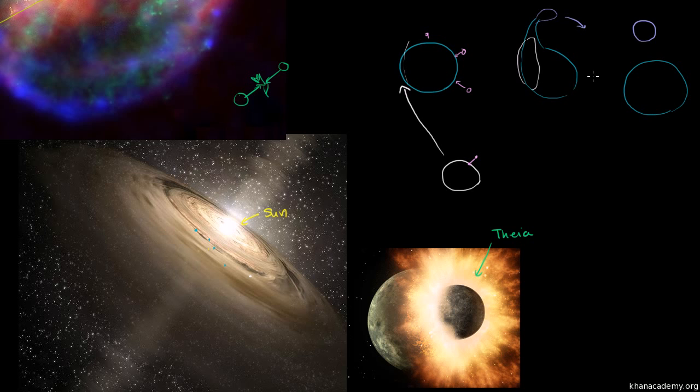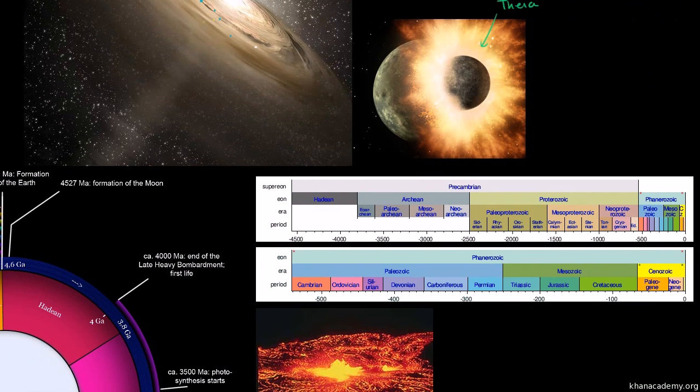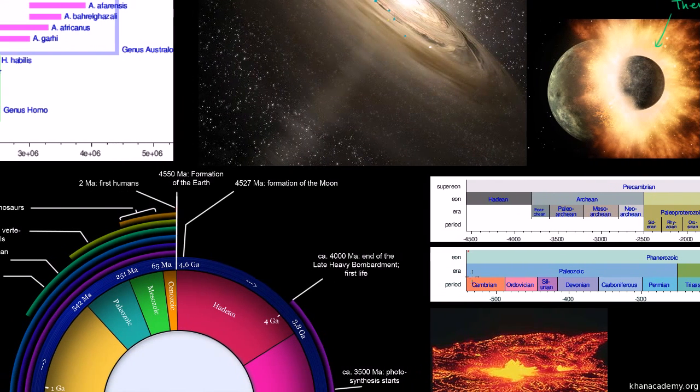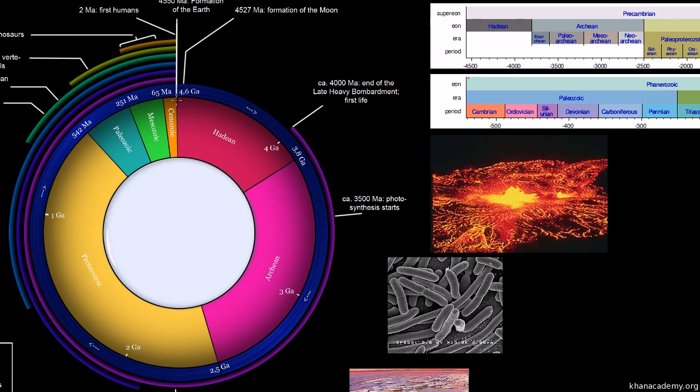That's how we actually think right now that the Moon actually formed. And even after this happened, the Earth still had a lot more violence to experience. Just to get a sense of where we are in the history of Earth, we're going to refer to this time clock a lot over the next few videos.